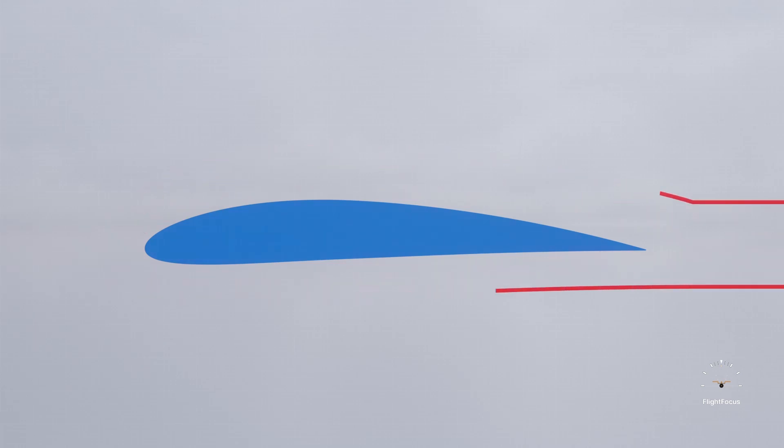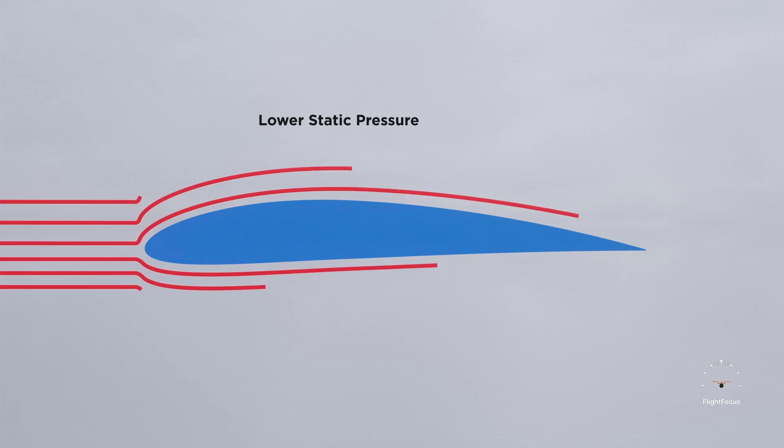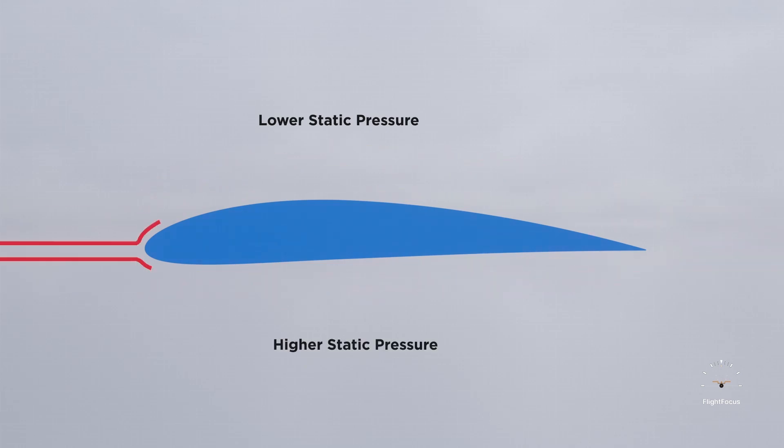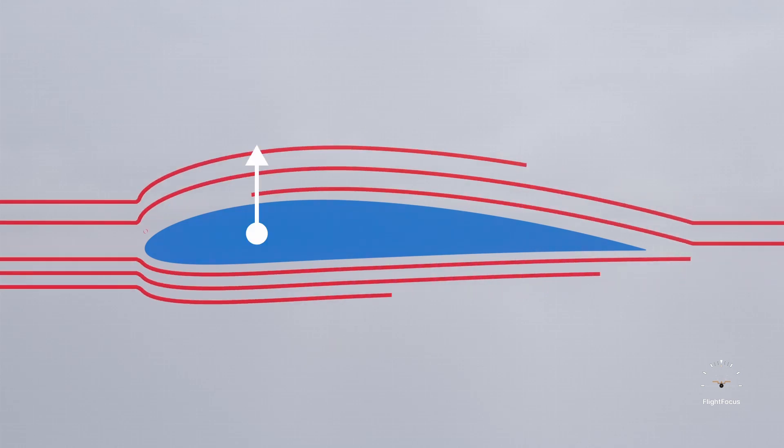The airflow over an airfoil travels faster, resulting in a lower static pressure, and the airflow beneath the airfoil travels slower, resulting in a higher static pressure. The pressure difference then creates an upward force called lift.